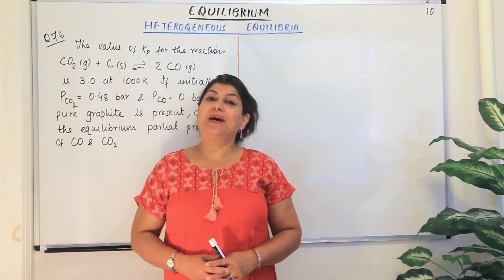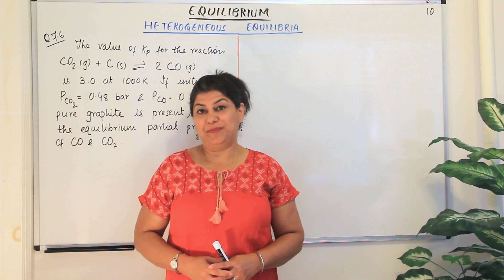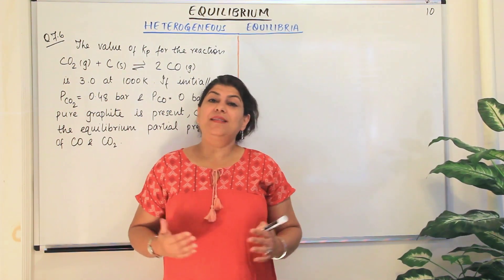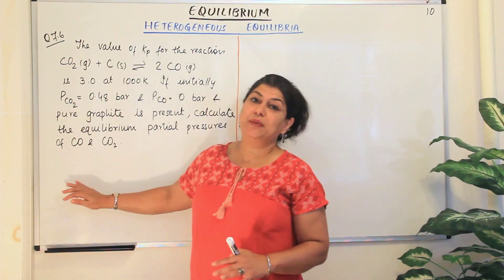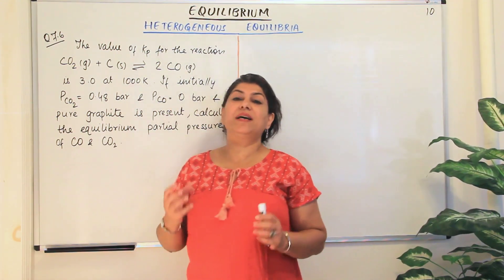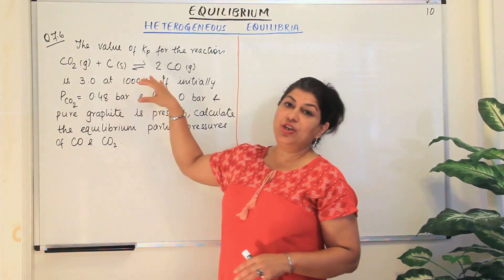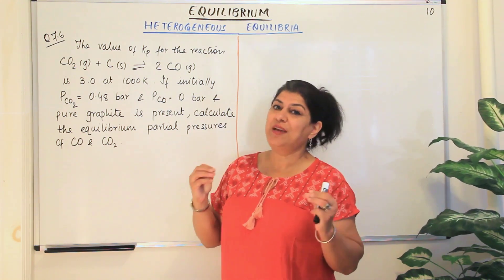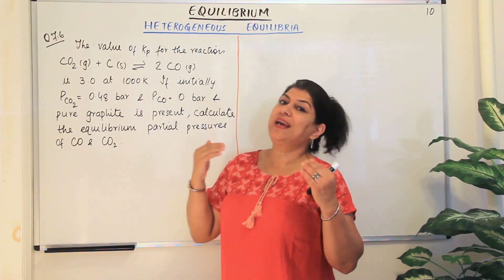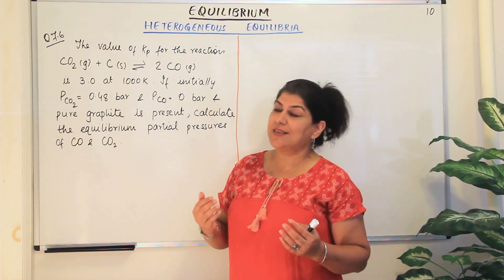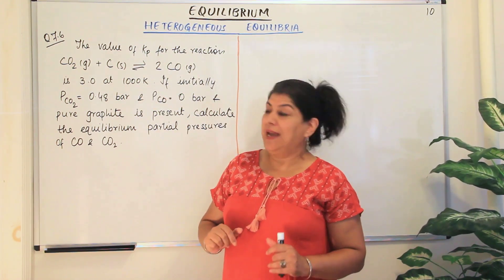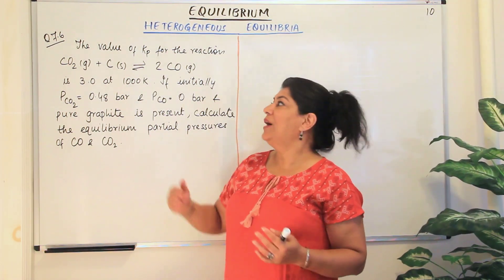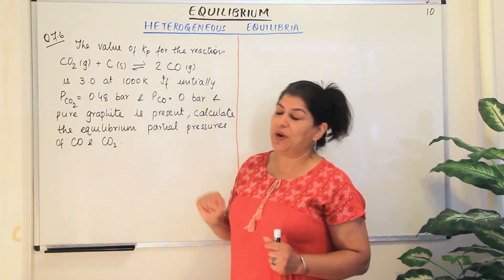I'm Seema and welcome to part 10 of the chapter equilibrium. In part 9 I told you about heterogeneous equilibria. In this video I'm going to solve a worked example to explain heterogeneous equilibrium — an equation in which the reactants and products do not all have the same physical state. How do we calculate the equilibrium constant for such an equilibrium? We'll also use quadratic equations to solve these problems.